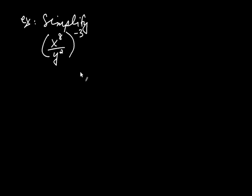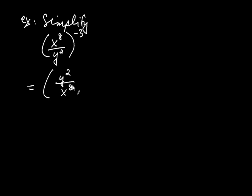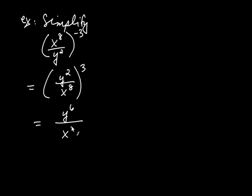Let's see how that works in an example. Let's say we're asked to simplify x to the eighth divided by y squared, whole quantity raised to the negative third power. I see a negative exponent and the base is a fraction, so I can make the exponent positive by taking the reciprocal of the base. This becomes y squared divided by x to the eighth, raised to the positive third. Applying the cube: y squared cubed is y to the sixth, and in the denominator, x to the twenty-fourth. That's your answer.